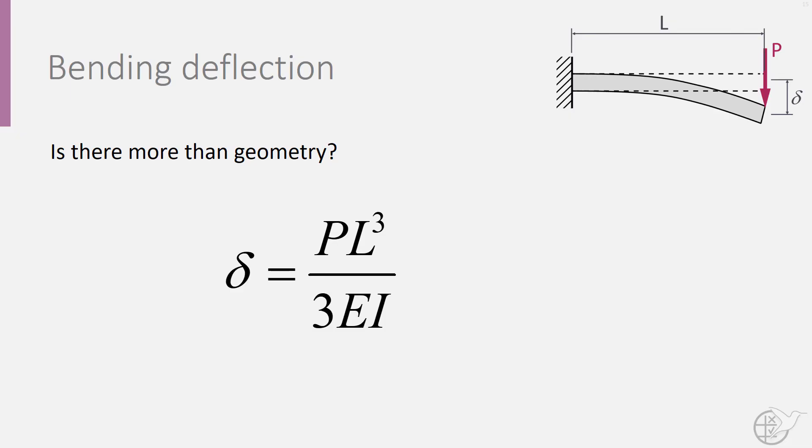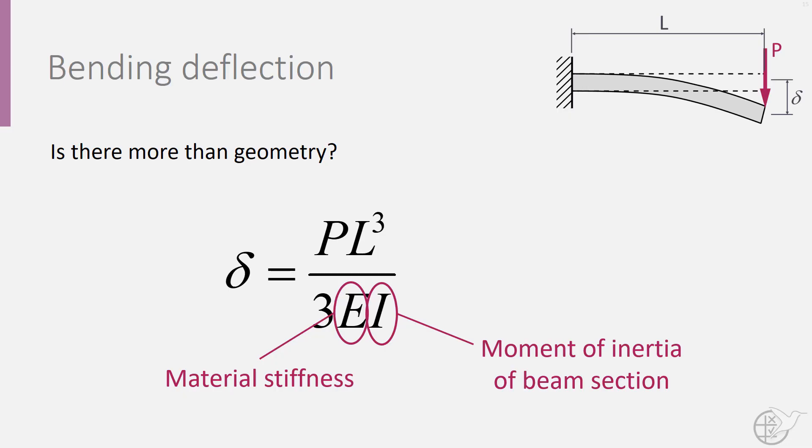we see that the bending deformation is inversely proportional to both the moment of inertia and the material stiffness. Because steel has a significantly larger material stiffness compared to aluminum, we can get away with a smaller moment of inertia and thus smaller tube cross-section.